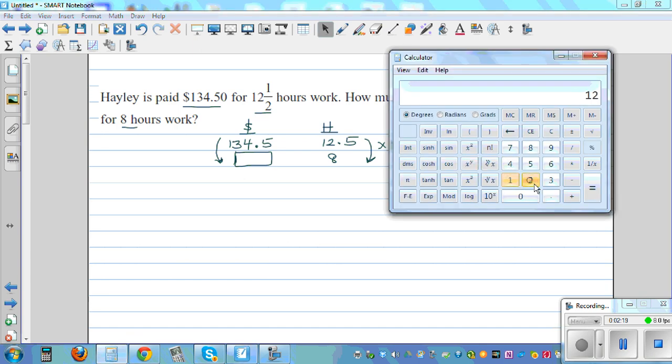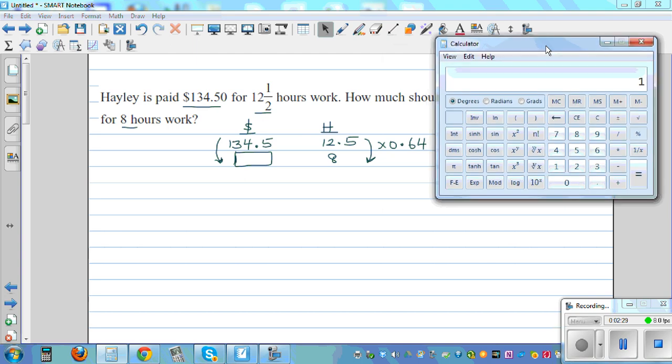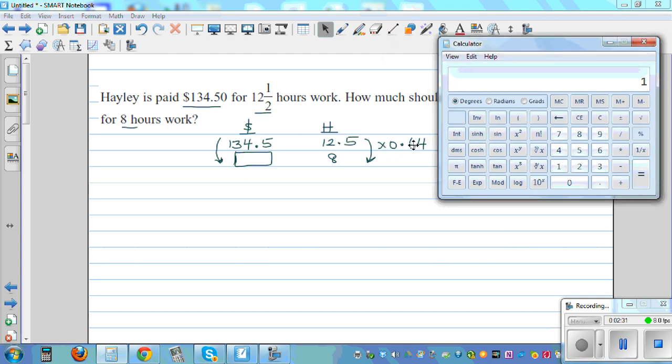So 12.5 times 0.64—this is what I'm trying to explain—12.5 times 0.64 should give you 8.